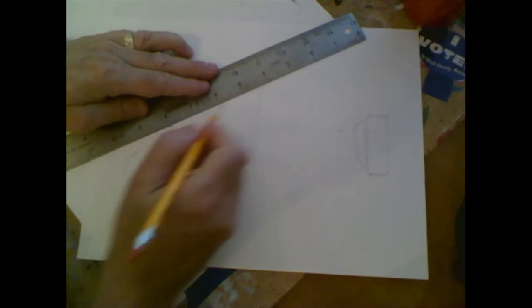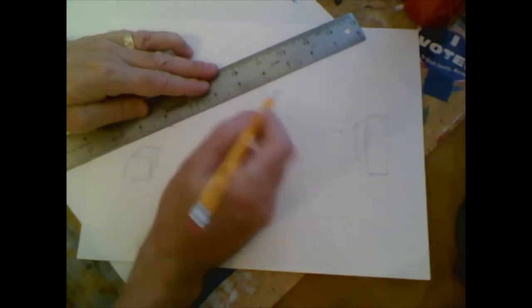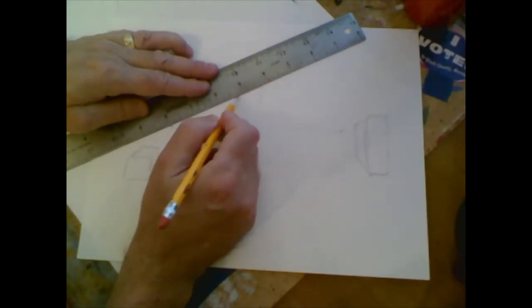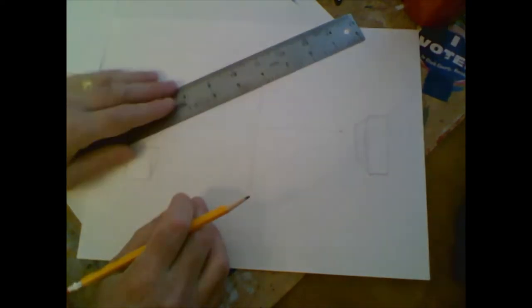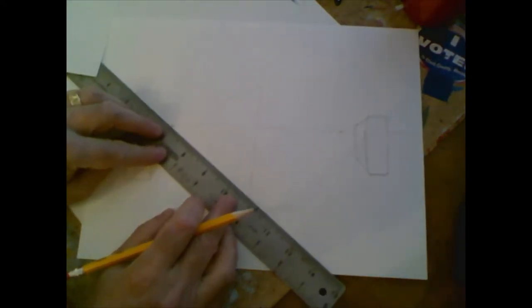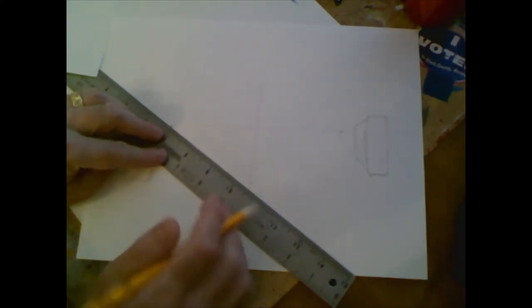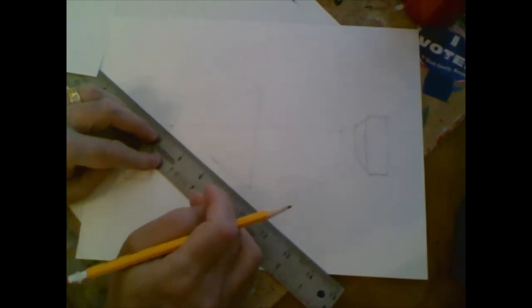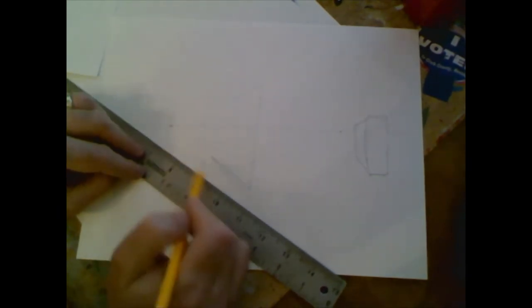So now I'm going to put my ruler on the vanishing point on this side and on the top of this line here. And then I'm going to draw a line towards the vanishing point. Then I'm going to come down here and draw a line going towards this vanishing point. Notice I didn't draw it all the way.